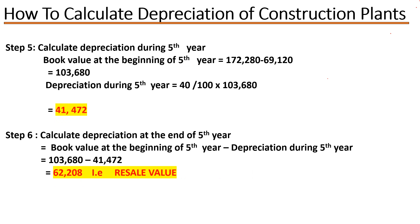At the fifth year, we find the book value at the beginning of the fifth year: book value at the beginning of the fourth year minus depreciation during the fourth year gives us 103,680. Depreciation during the fifth year is 40/100 × 103,680 = 41,472. To calculate the value at the end of the fifth year: 103,680 − 41,472 = 62,208. This is the salvage value — the resale value of your plant at the end of its five-year lifespan. That's how we do it. Until next time, bye bye.